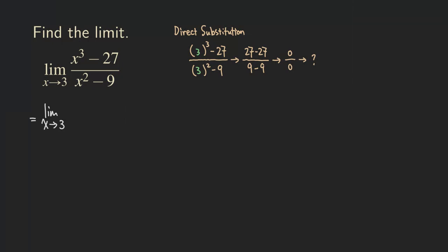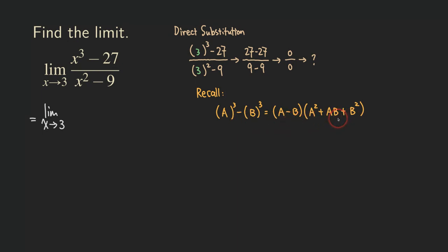Let's recall the difference of two cubes formula. If you have A cubed minus B cubed, then it factors as (A minus B)(A squared plus AB plus B squared). So that's how we factor the difference of two cubes — into a binomial and a trinomial.